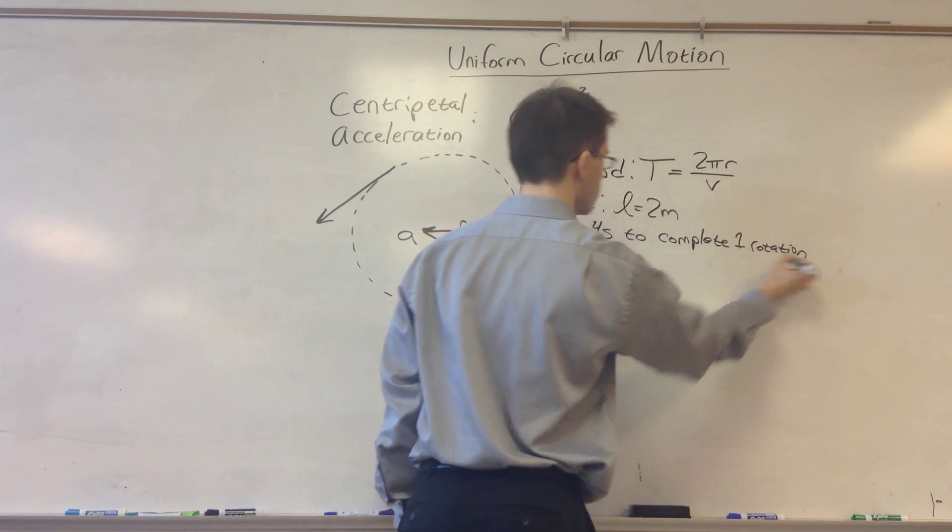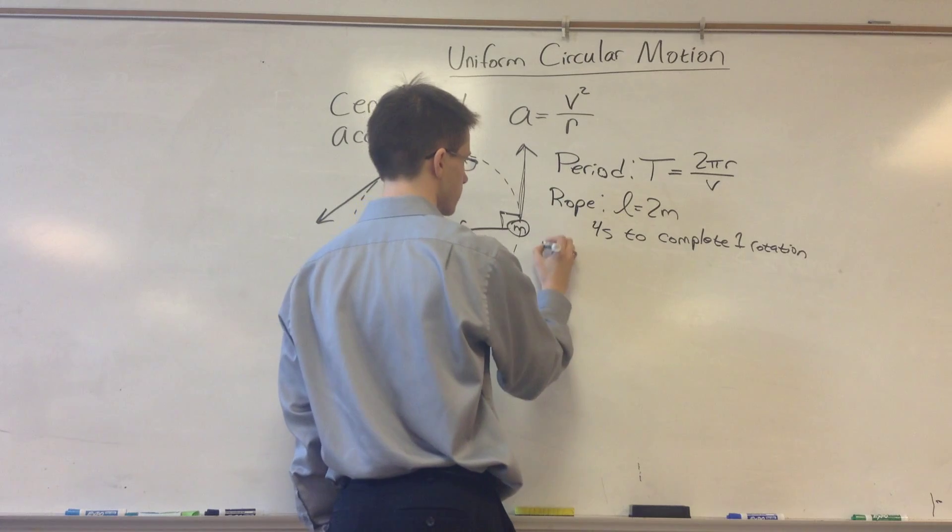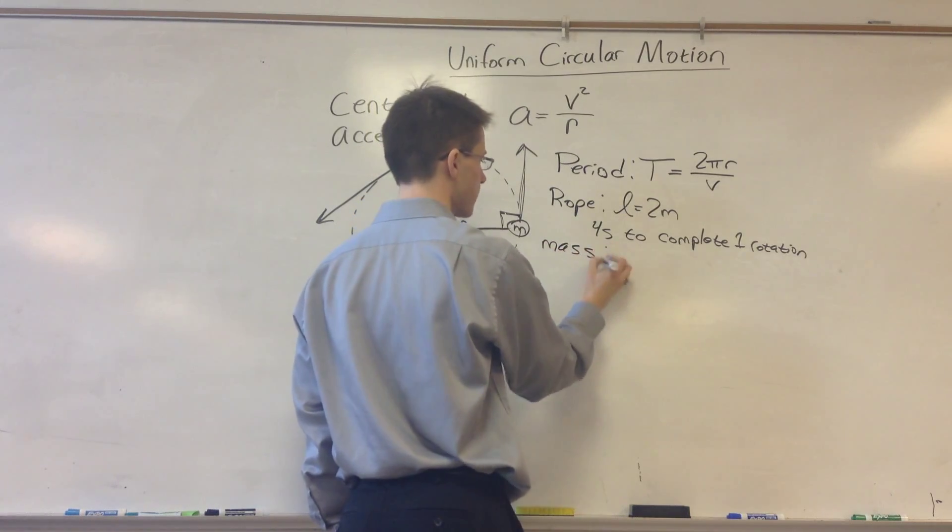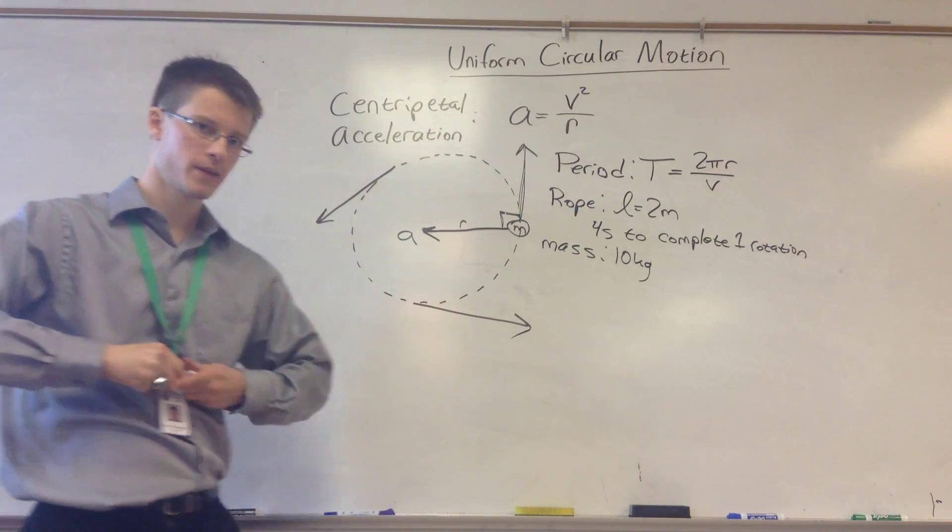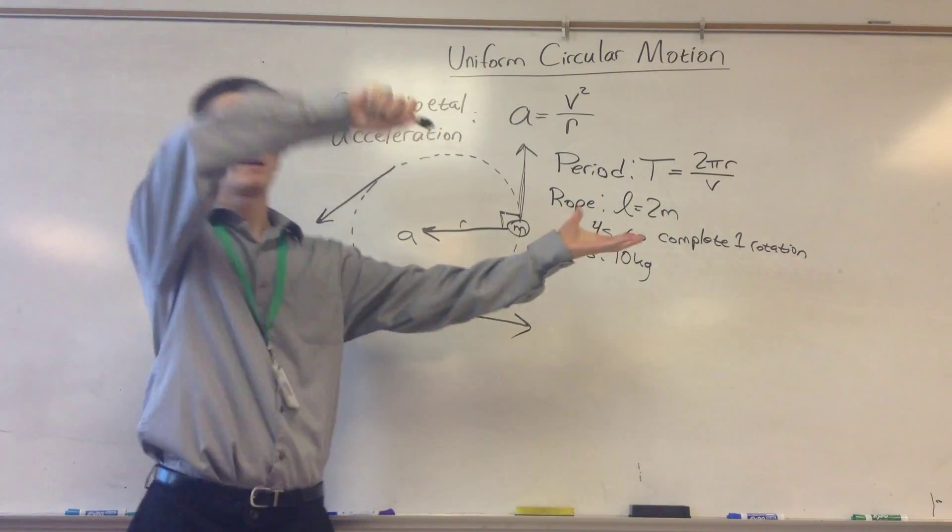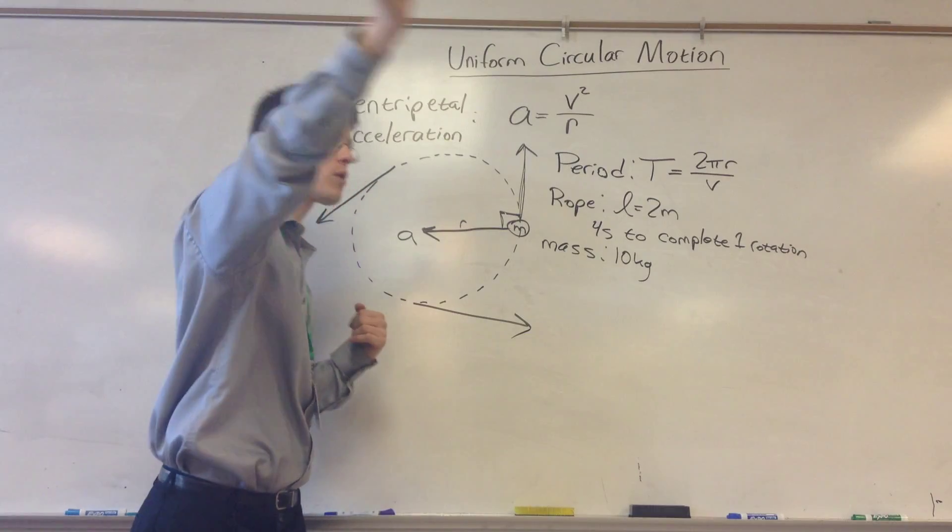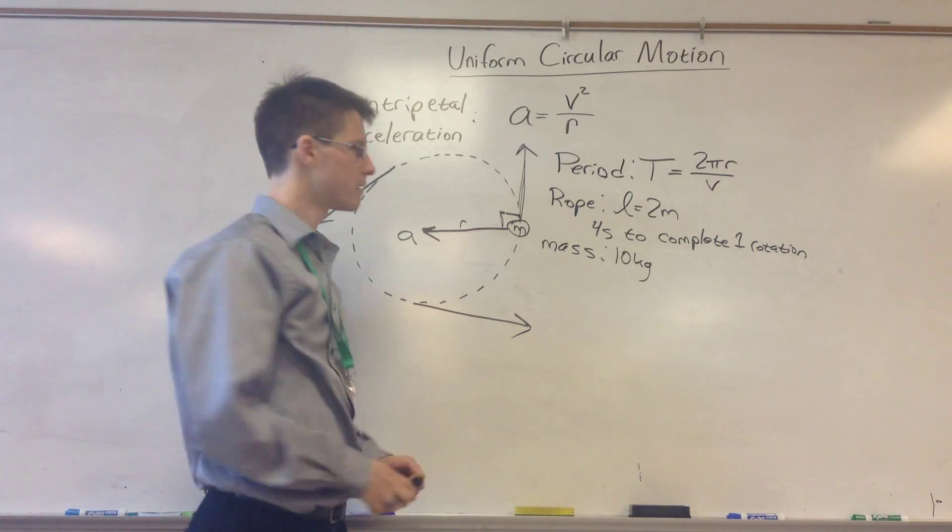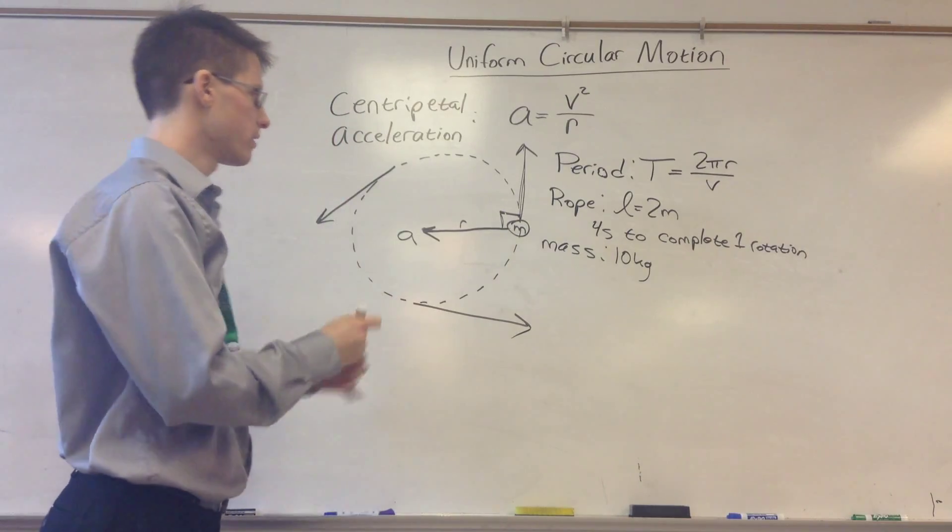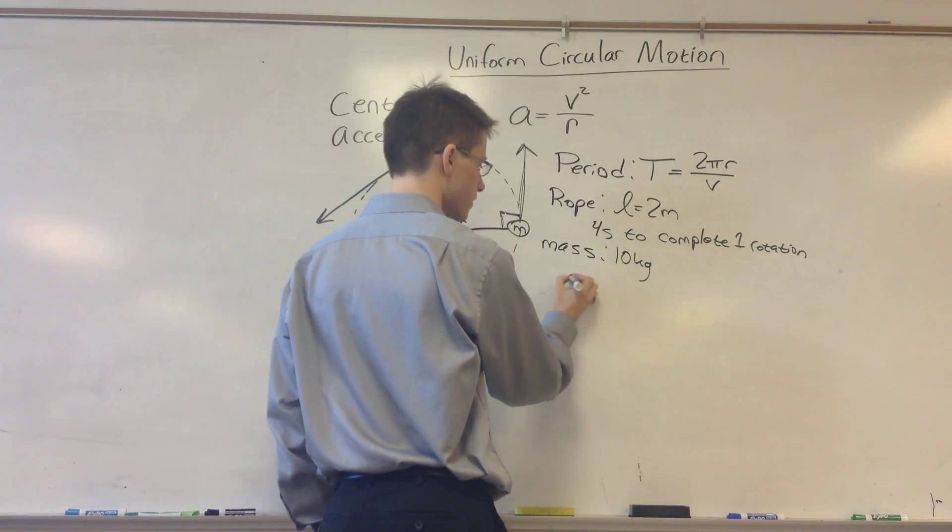And, let's also say the object has a mass, the object on the end of my rope has a mass of 10 kilograms. So I have a 10 kilogram object attached to a 2 meter rope, and I'm swinging it around my head, and it takes 4 seconds to complete one rotation. So that's really slow. And I want to know, that's two parts.